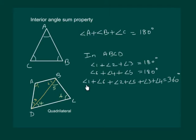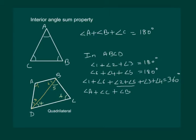Now look at the left-hand side. Angle 1 is the same as angle A. Angle 6 is angle C. Angle 2 plus angle 5 makes the complete angle B. Similarly, angle 3 plus angle 4 will make angle D. So we write angle A plus angle C plus angle B plus angle D equals 360 degrees. Hence we have proved that the sum of the angles of a quadrilateral is 360 degrees.